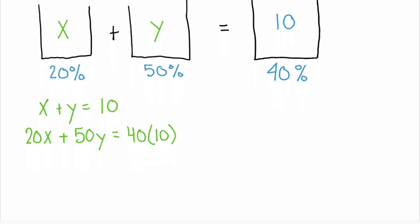So now we have our two equations. And for this, we want to use substitution. So let's solve our first equation in terms of x. So we subtract y from each side, and we know that x equals 10 minus y. And our second equation, let's do the simplification here on the right. We have 20x plus 50y equals 400.